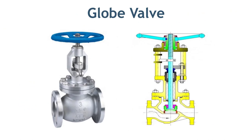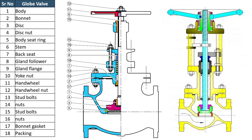A globe valve, like the one shown in this slide, is a prevalent type of valve regularly used in refinery, petrochemical, and almost all process facilities where flow and pressure control is required. In this cross section, you can see the different parts of the globe valve. The body of the globe valve is globular in shape — that is why the name globe came.